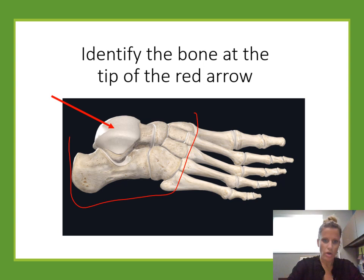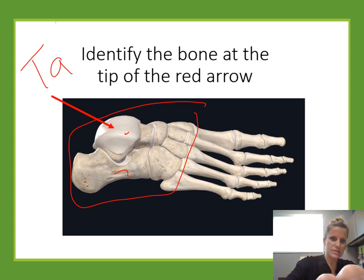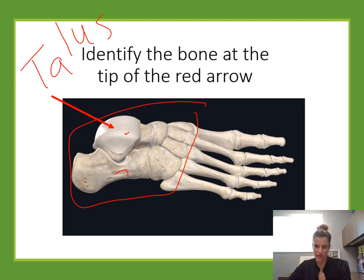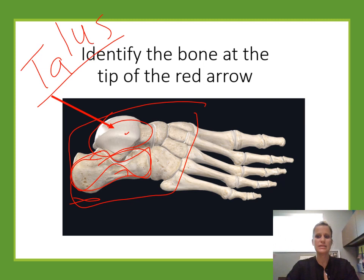Identify the bone at the tip of the arrow. These are the tarsal bones — the bones of the ankle. The two largest ones should be easy to name. The top one is the talus, which forms the joint with the bones of your leg like your tibia. The large heel bone underneath is the calcaneus — that's why the heel region is called calcaneal. This question specifically asks for the talus, the top bone.